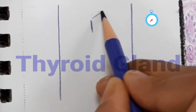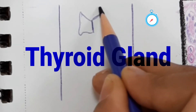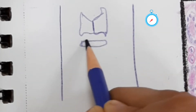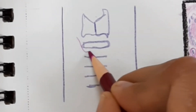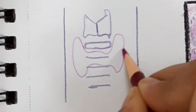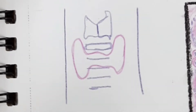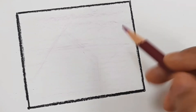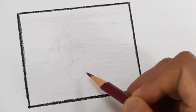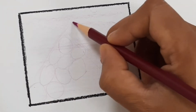The thyroid gland lies in the neck. Below the thyroid cartilage of the larynx is the cricoid cartilage, and below the cricoid cartilage there is the trachea. In front of the trachea lies the thyroid gland, at the level of C5 to T1 vertebrae. It is about 25 grams in weight and is covered by a capsule, which sends septa within the gland, dividing it into lobules.